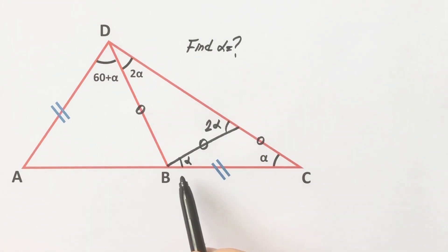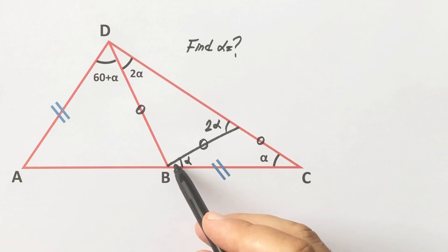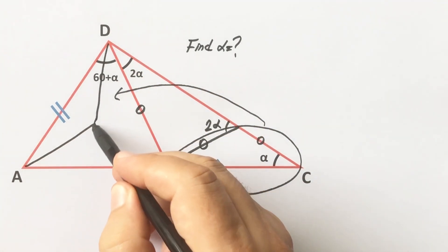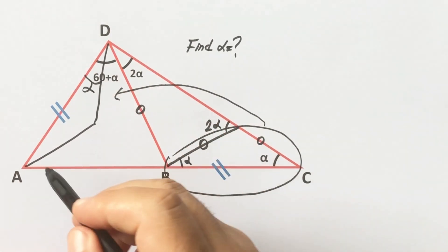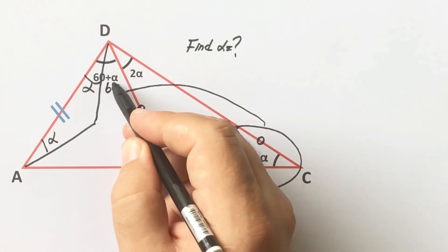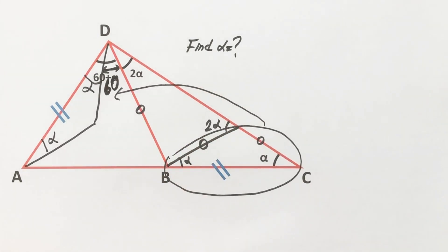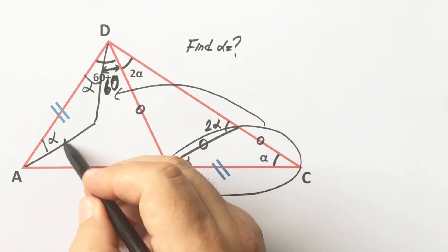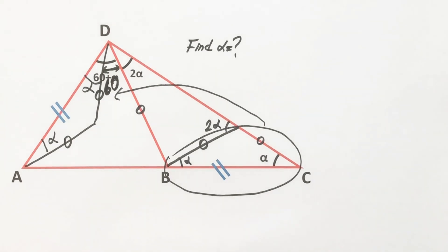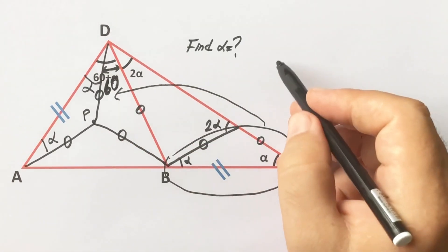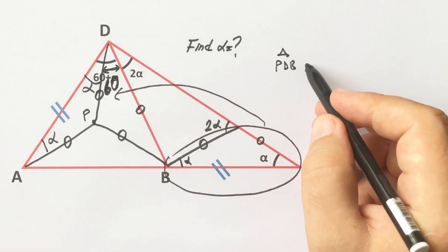If we move this triangle to the left side, this angle is alpha and this angle is also alpha, so 60 degrees are left here. These two triangles are congruent, therefore these two sides must be equal. If we connect these two points, we get an equilateral triangle — let's call it triangle PDB. This is an equilateral triangle.